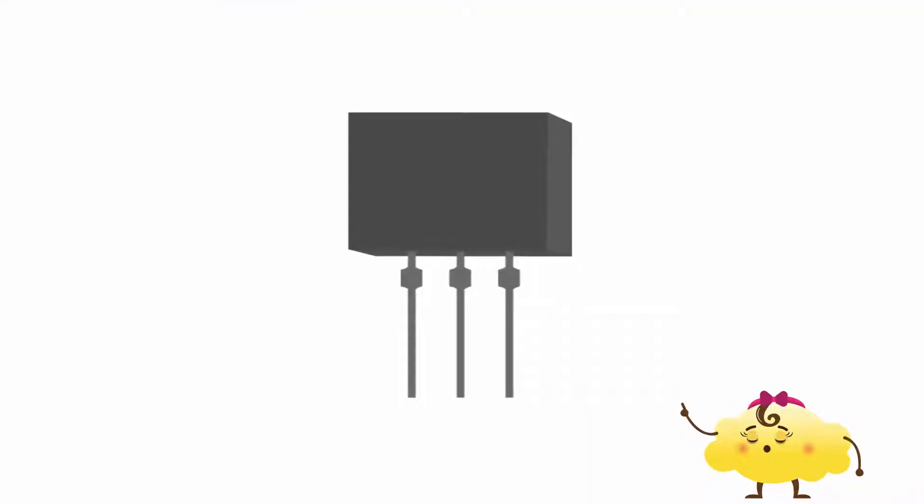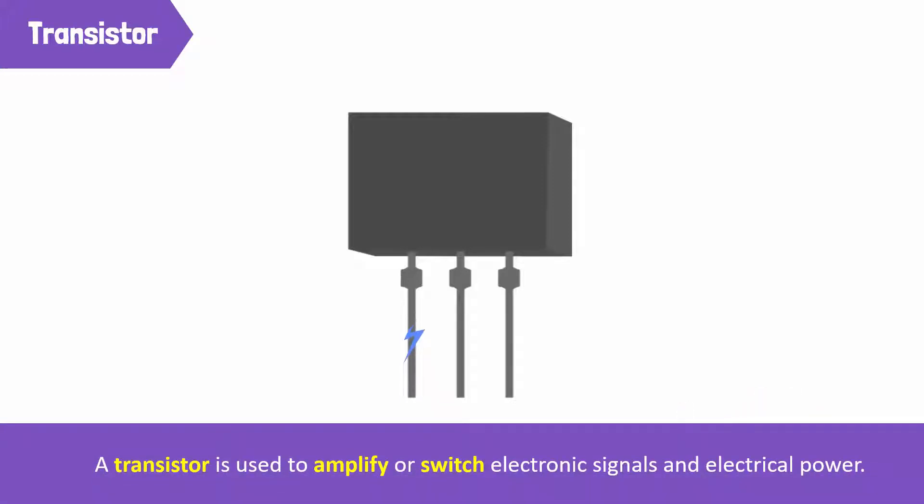Oh, look! I found a clip! A transistor is an electronic component with three legs. It takes in a tiny electric current at one end and produces a much bigger electric current at the other. Therefore, it is used to amplify or switch electronic signals and electrical power.